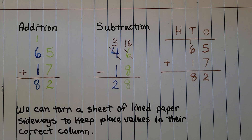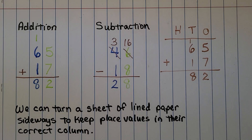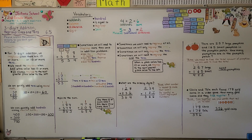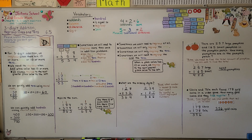For those new to my videos, we can turn a sheet of lined paper sideways to keep place values in their correct columns. Remember to count your regrouped numbers and ask yourself: are there ten or more ones? Are there ten or more tens? And you'll know that you need to regroup. Our next lesson, 6.6, we're going to do word problem solving with three-digit subtraction. I hope you'll join me there. Bye!